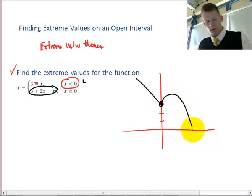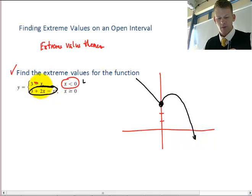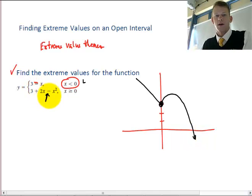The reason I know it's upside down is from parent function knowledge, the x squared term is negative, so that turns upside down.